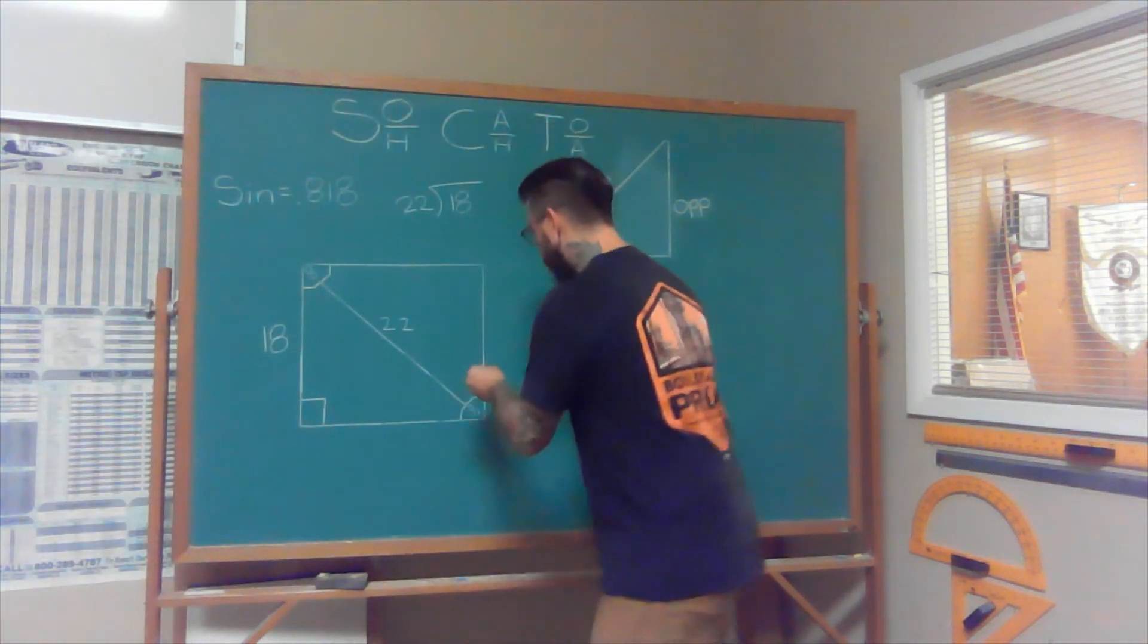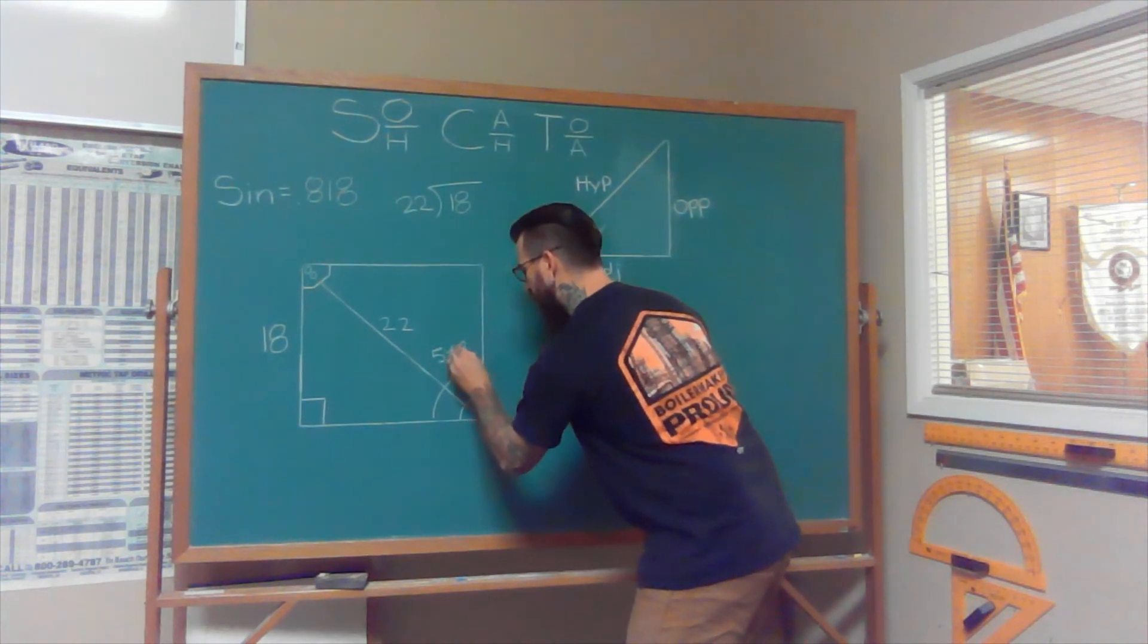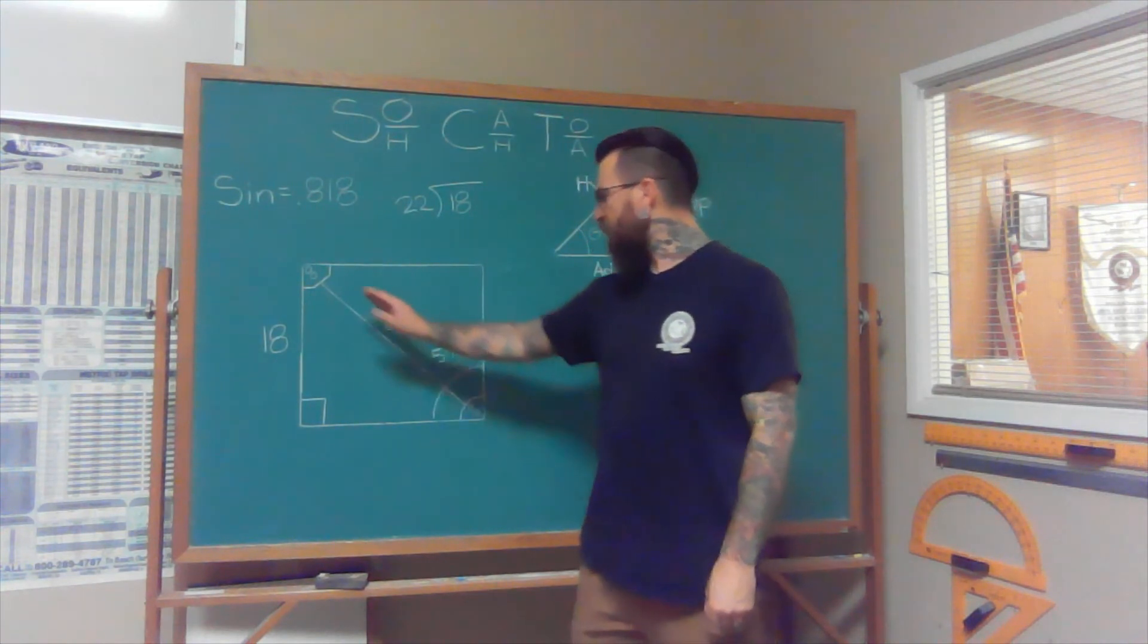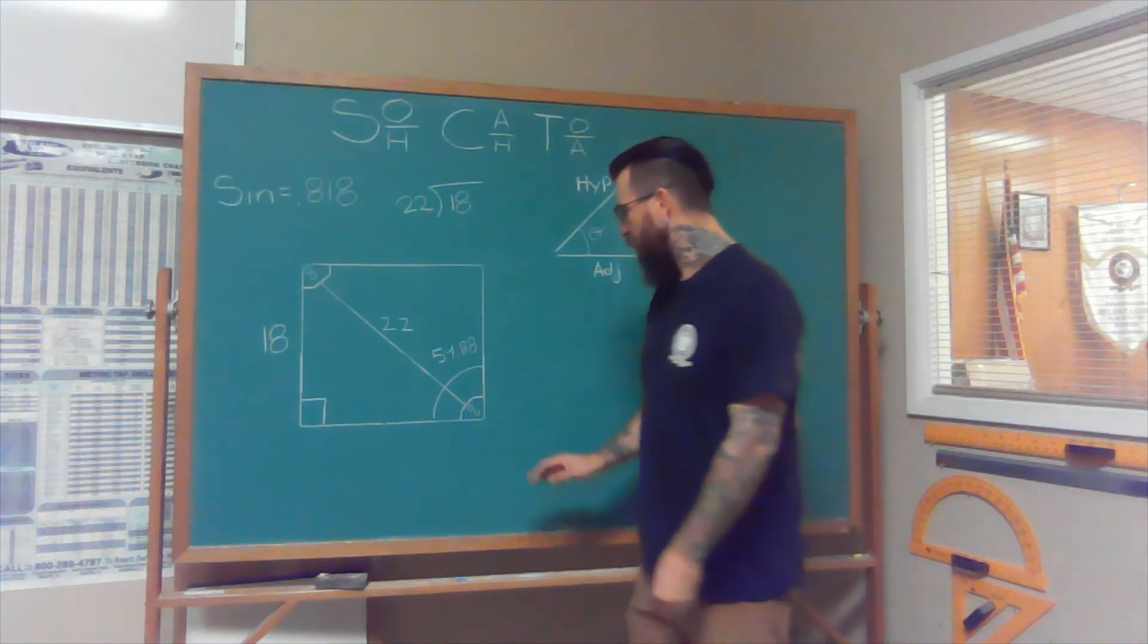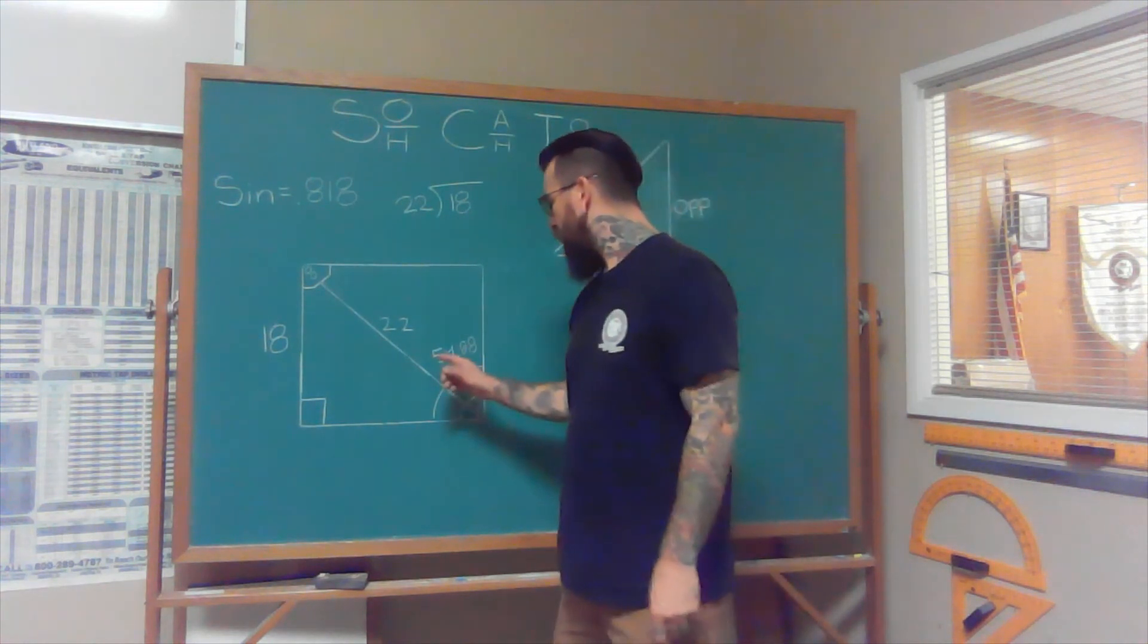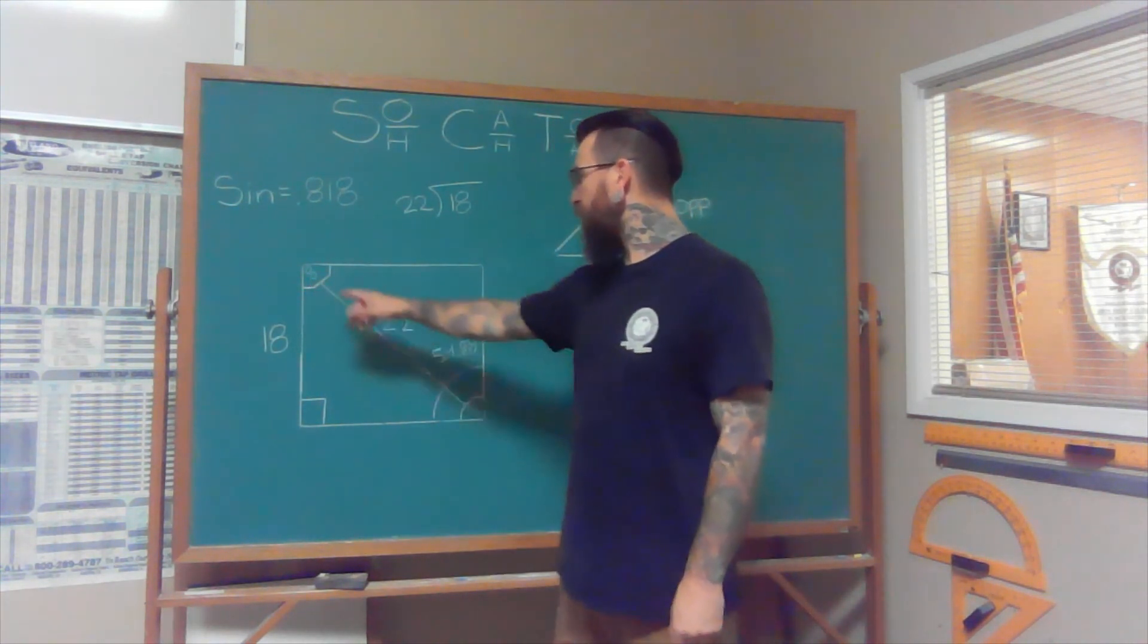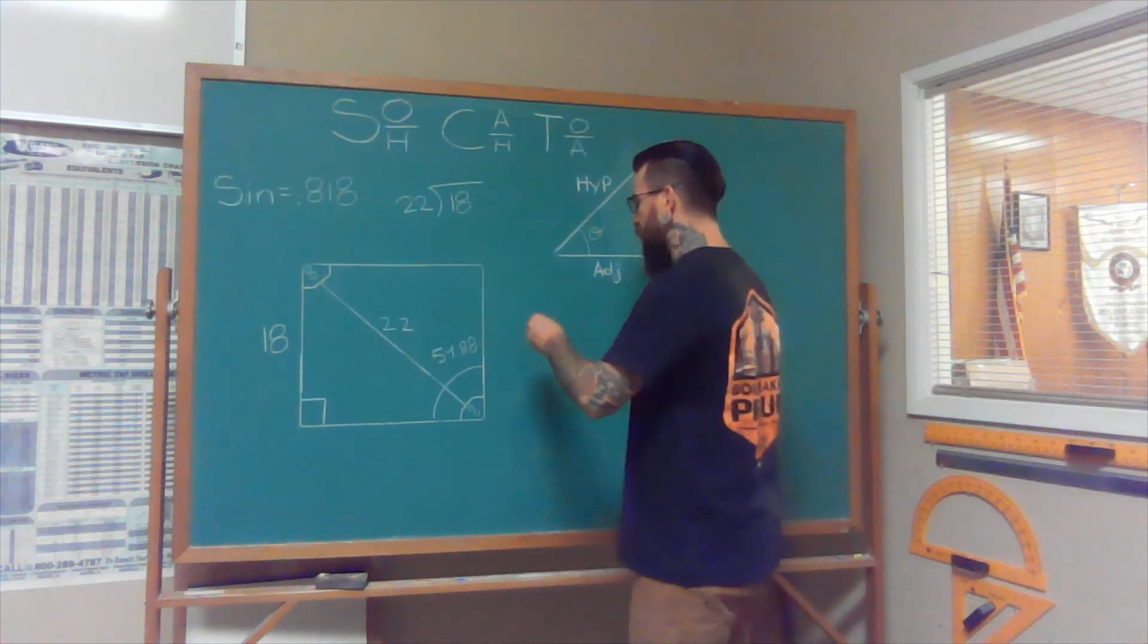Which means that this right here is 54.88 degrees. So we're good. We can go ahead and scribe us a line on those gussets at 54.88 degrees. And everything should be fine. It's going to be 54.88 degrees off of the base right here. But as we know, there's 180 degrees in every triangle. And if that's not 45, that's not 45. So what we have to do now is we have to figure out what the top gusset is. So as we showed in the last video, a very simple process.